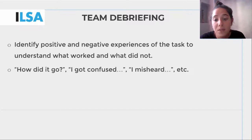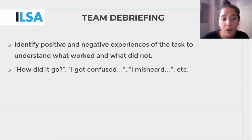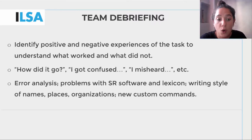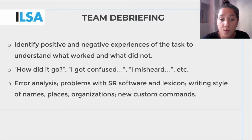Team debriefing can be simply carried out by discussing with the other re-speakers or editors about how it went — for instance, noting where one was confused or did not hear clearly, asking what others think and whether they are satisfied. When there is a chance of a more in-depth conversation, it is good to discuss any problems encountered with the software and the lexicon, agree on the writing style of specific words, organisations, names, places, etc., and agree on custom commands to set in order to improve accuracy.